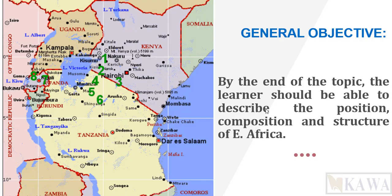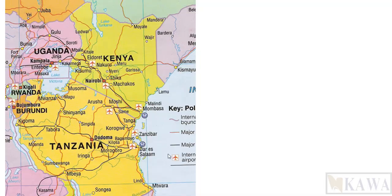Moving to the location of East Africa, we are expected to name the countries bordering East Africa. On the eastern side, we find the Indian Ocean and Somalia. To the north, we find Ethiopia and South Sudan. You should be able to name all these bordering countries based on what you see on the map.